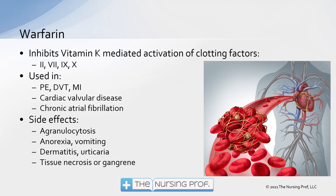By inhibiting these vitamin K-mediated pieces of the clotting cascade, warfarin helps prevent clots from occurring. It doesn't completely block the cascade — it just mediates the activation of clotting factors. So if a patient is developing clots inappropriately, perhaps due to sluggish circulation or atrial fibrillation with blood sitting in the ventricle, warfarin helps keep that blood from being overly sensitive to clotting. It's used in patients with pulmonary embolism, deep vein thrombosis, myocardial infarction, cardiac valvular disease, and chronic atrial fibrillation.